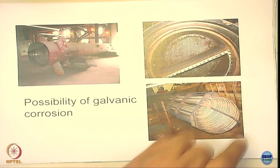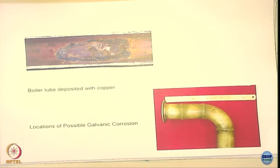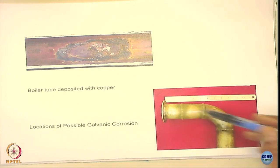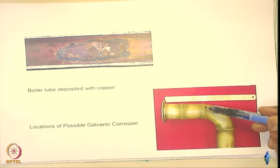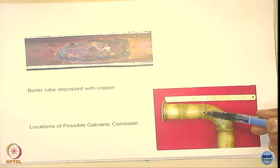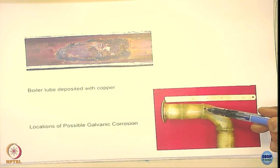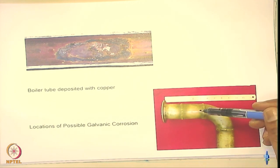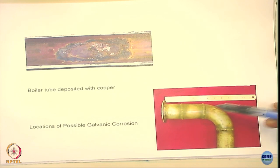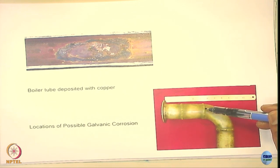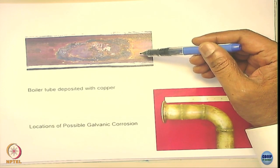Another illustration: when you weld structures, the weld fusion zone can have a different chemical composition compared to the tube itself. So there are different chemistries — metal one, the weld fusion zone, and the tube as another metal — coming into electrical contact with each other.